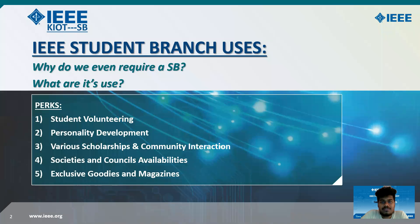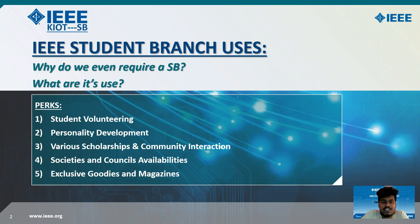First of all, everyone would have a small question in our college and as well as in many other colleges, because you're going to be joining IEEE and you'd have no idea about it. So this video will help you get through. First of all, why do we need a student branch? Why do we even require an SB? What are its uses?